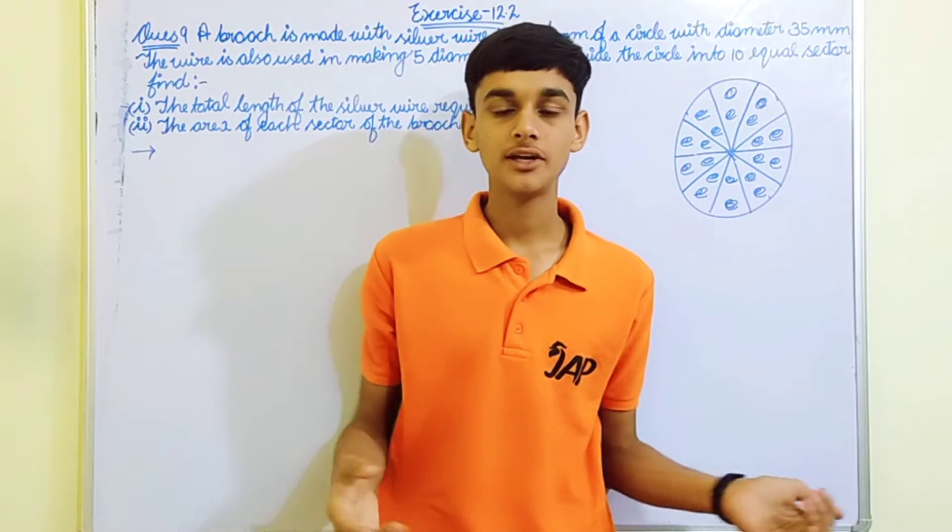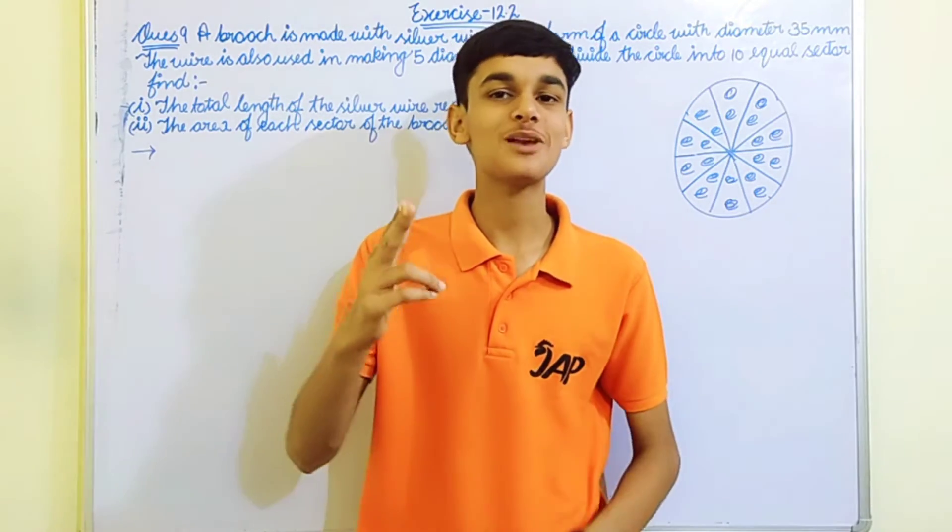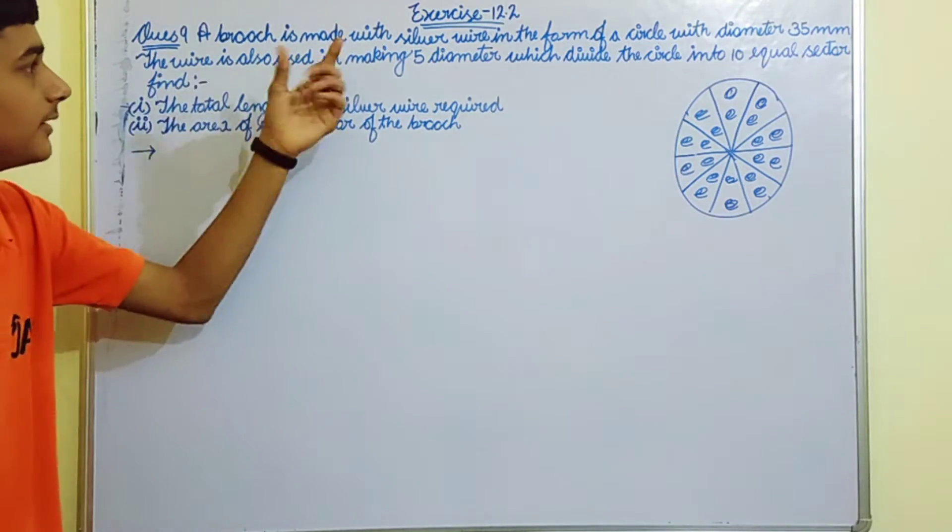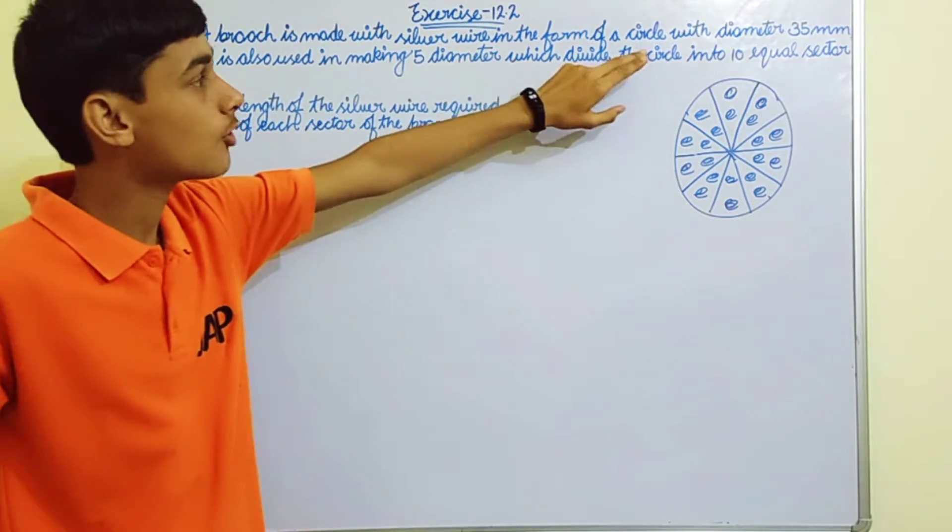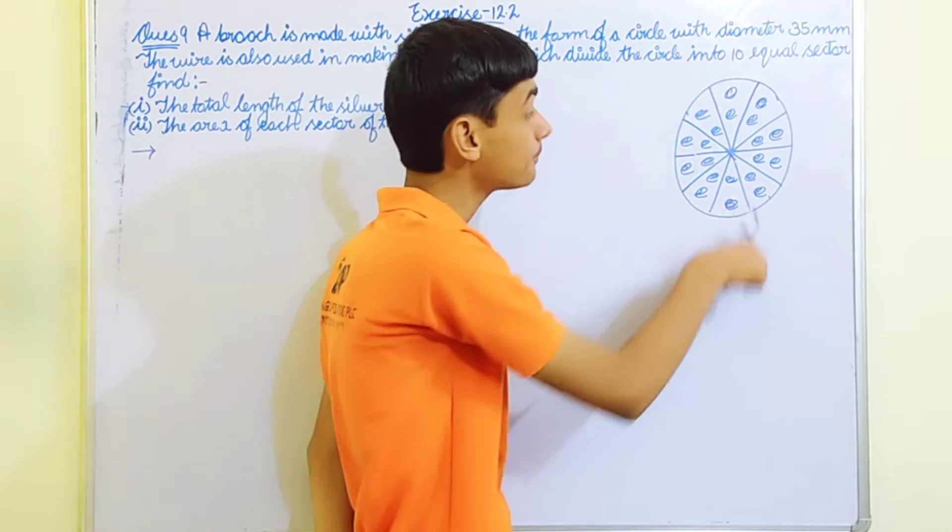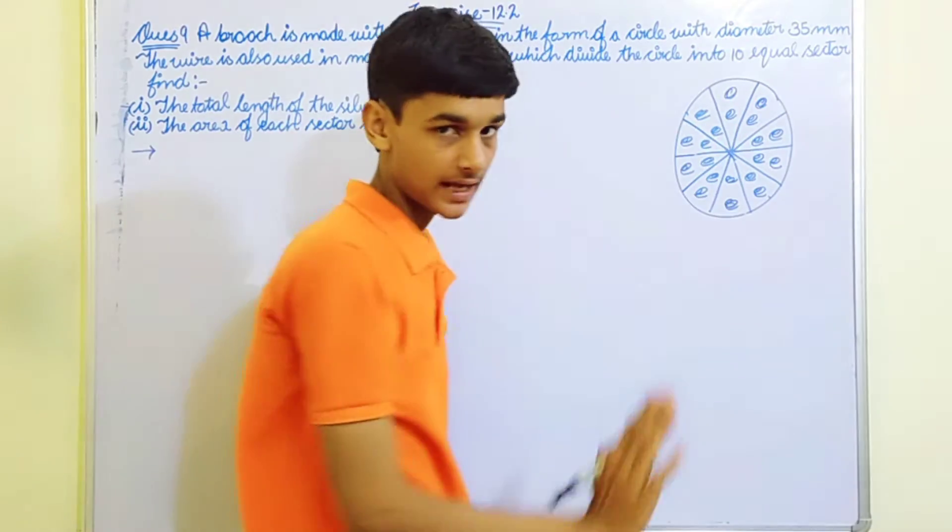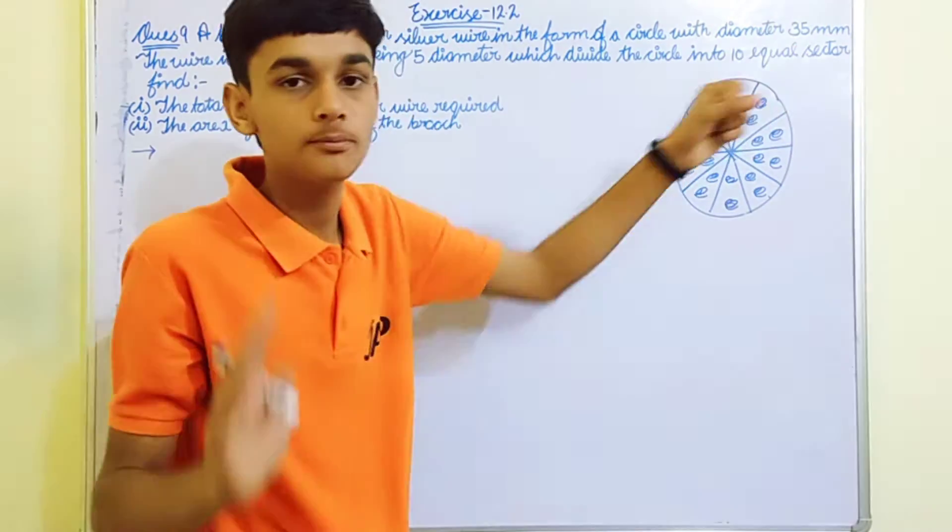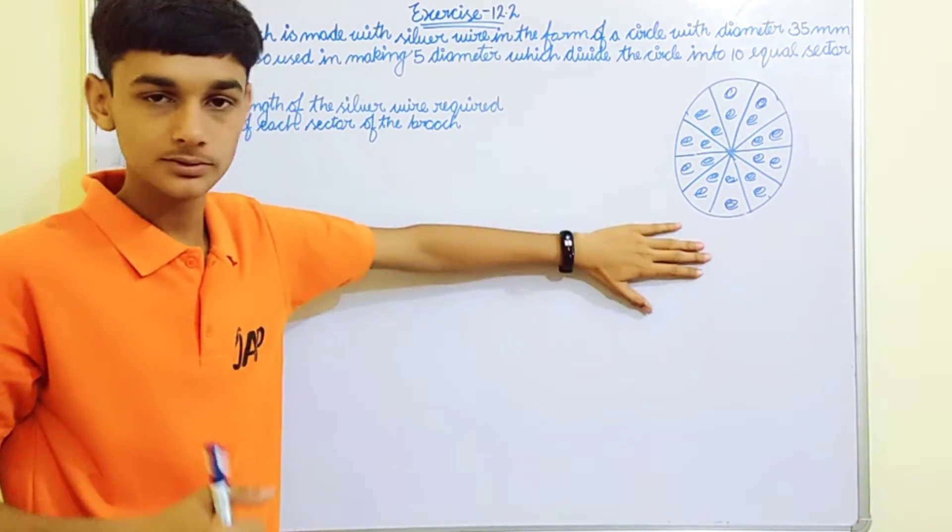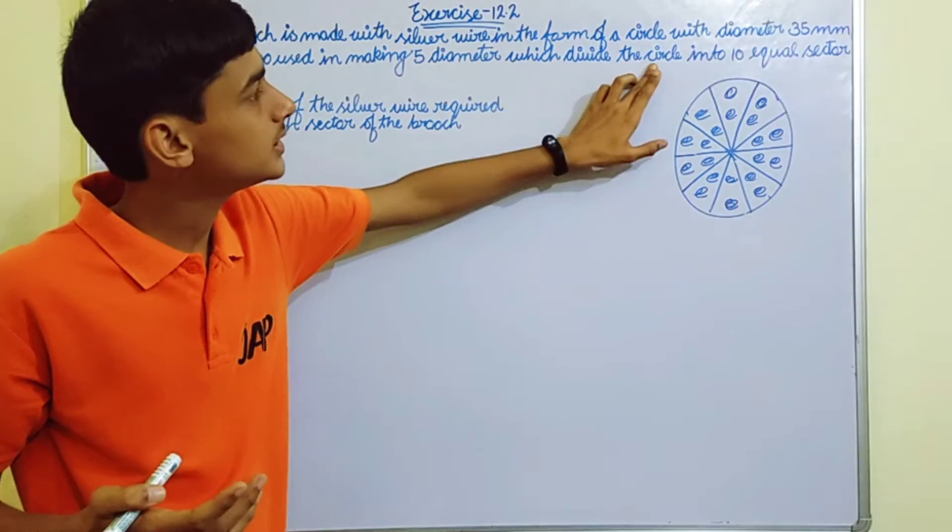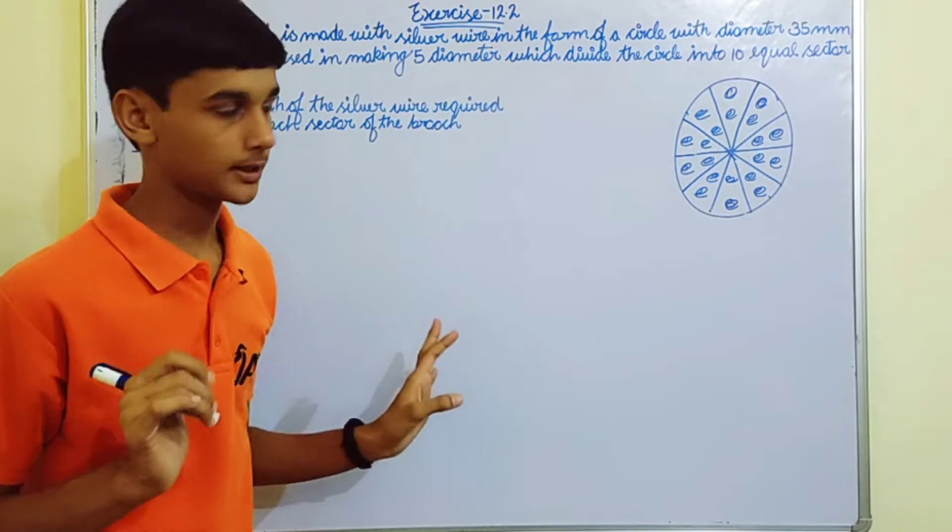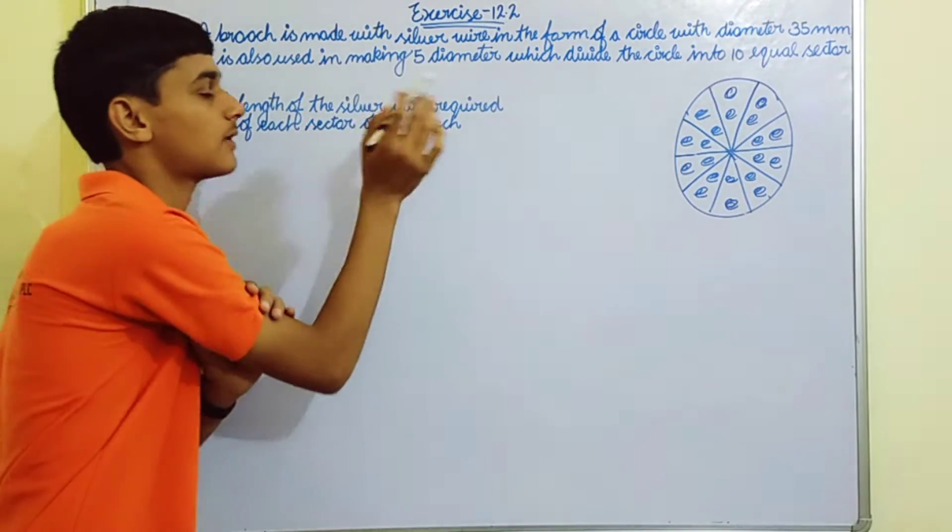So guys, here we are going to discuss question number nine of exercise 12.2. A brooch is made with silver wire in the form of a circle with diameter 35 mm. The wire is also used in making five diameters, which are used to completely divide it into ten equal sectors.